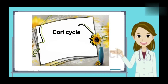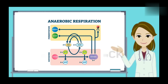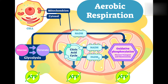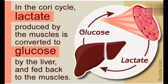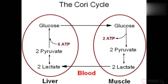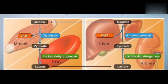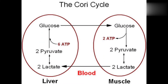When anaerobic conditions occur in active muscle, glycolysis produces lactate. The lactate moves through the bloodstream to the liver, where it is oxidized back to pyruvate. This process is called the Cori cycle. The Cori cycle is the flow of lactate and glucose between the muscles and the liver.